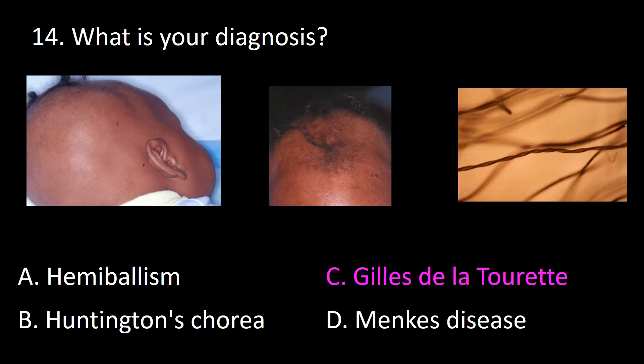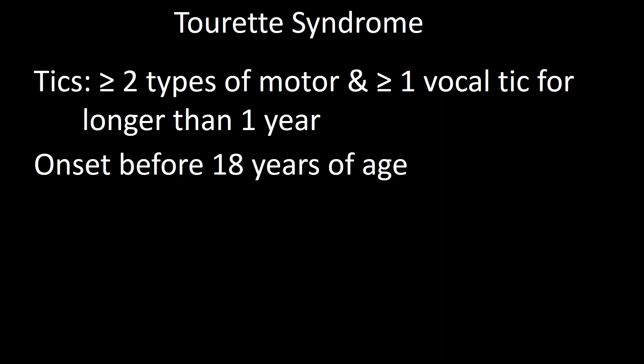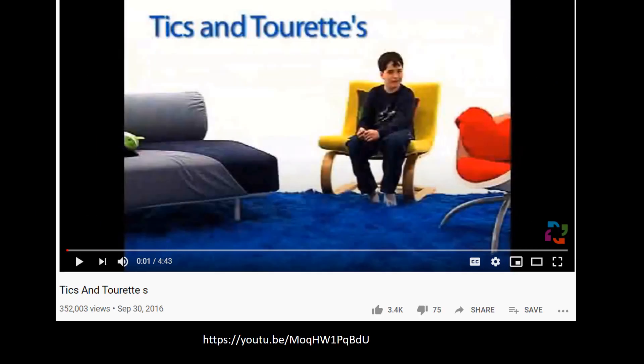The third choice is Gilles de la Tourette or Tourette syndrome. It is characterized by two cardinal findings: sudden involuntary twitches or movements called motor tics, and sudden utterances called vocal tics. They must be present for over one year to establish the diagnosis and start before 18 years of age. The cause is unknown, but believed to involve a chemical imbalance in the basal ganglia that produces no consistent MRI-detectable abnormality.